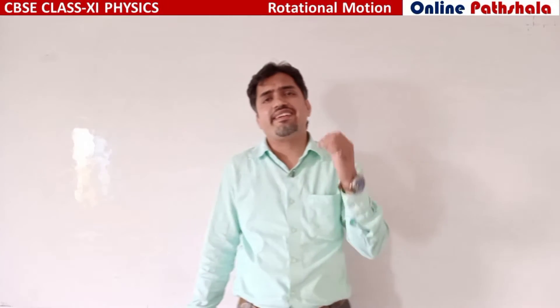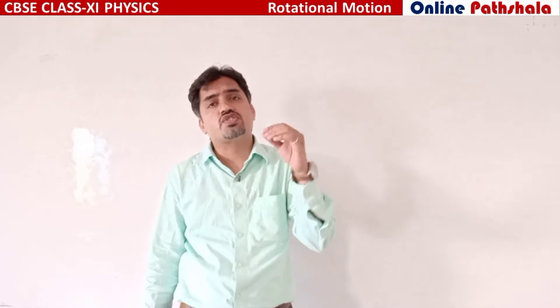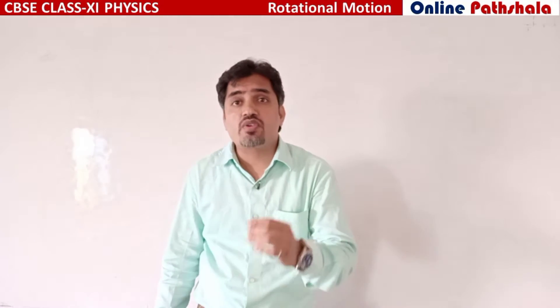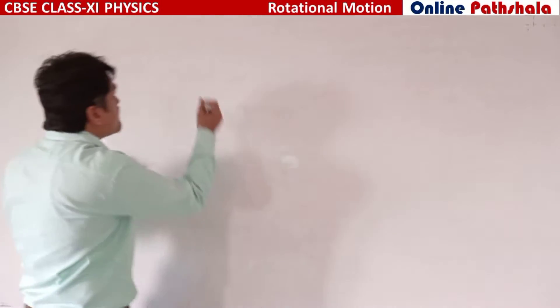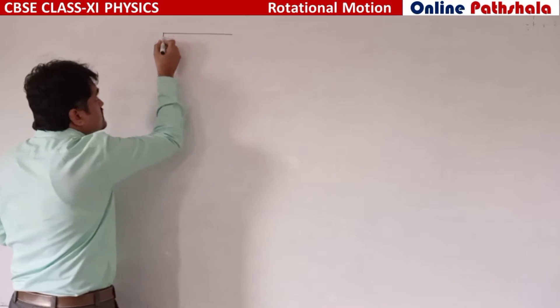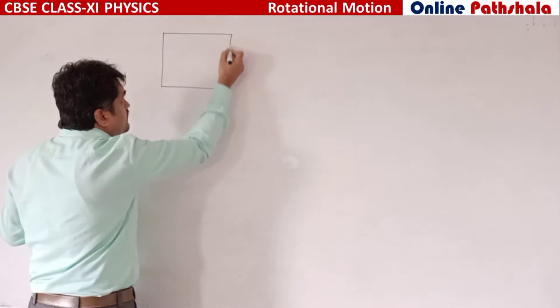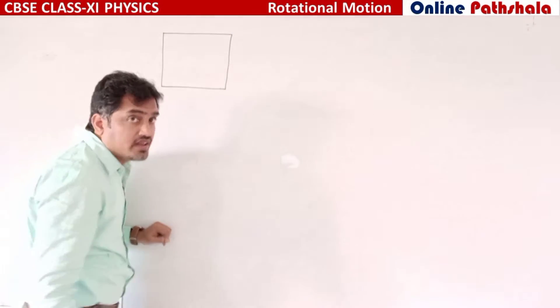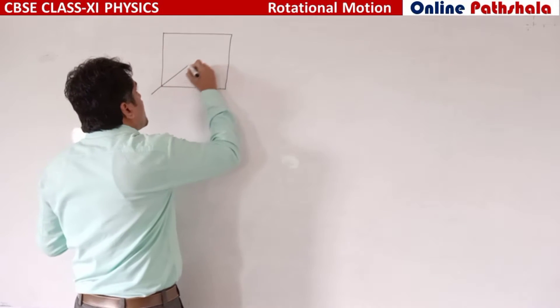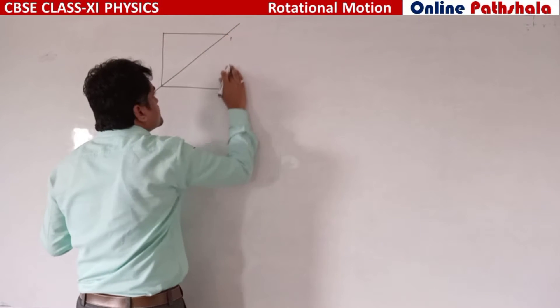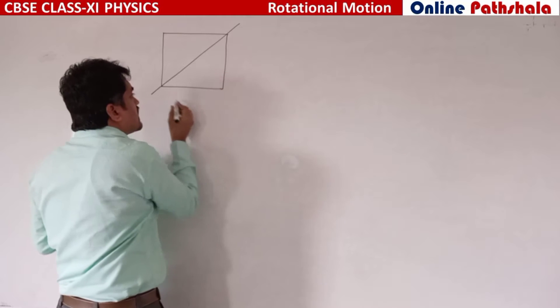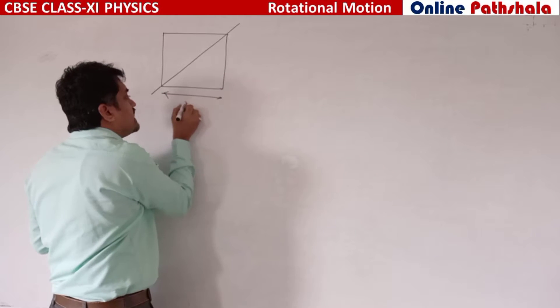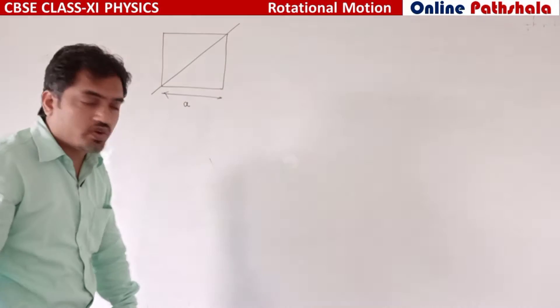Hello my dear students. In this lecture we are solving a very interesting numerical. We are finding the moment of inertia of a square lamina about one of its diagonals. We have a square lamina with side 'a' and mass 'm'.